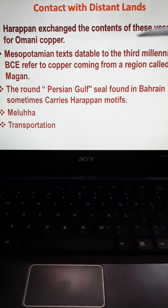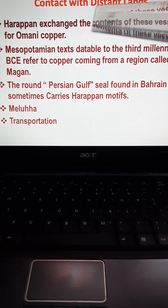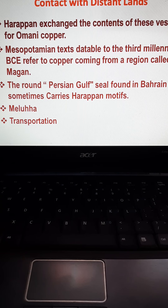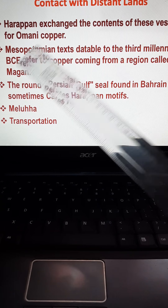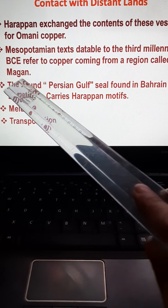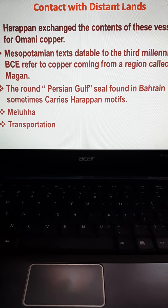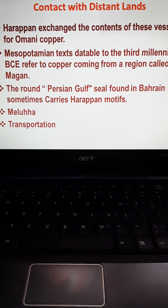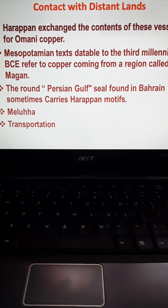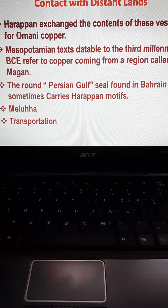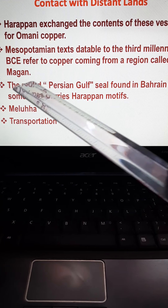Harappans exchanged the contents of vessels for Omani copper. Omani people used to take the black-coated jars from Harappan, while Harappan used to bring copper from Oman. Mesopotamian texts dating to the third millennium BC also refer to copper coming from a region called Magan. Meluha was another region, possibly Harappan, from where carnelian, lapis lazuli, copper, goats, and varieties of wood were brought.